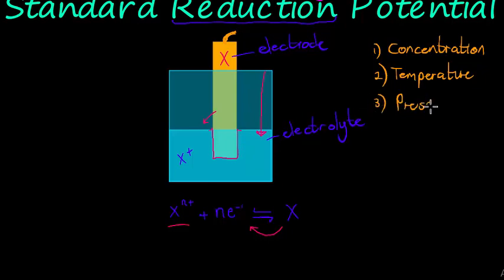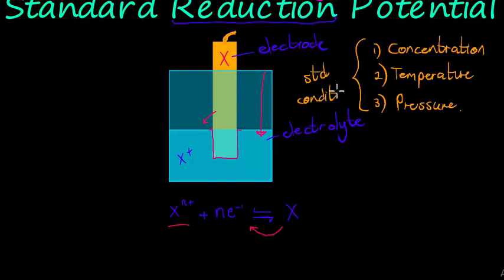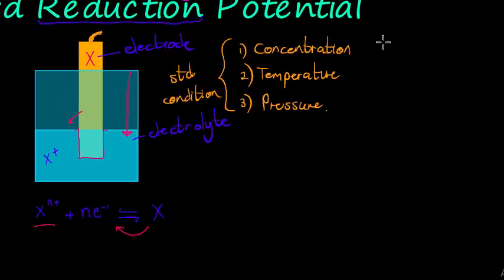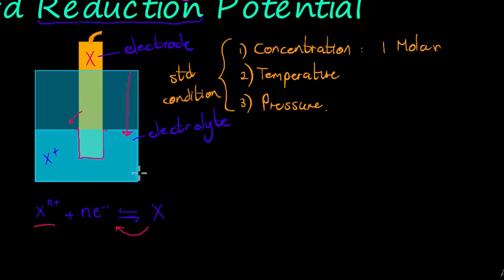We are going to use standard conditions. Under standard conditions: concentration is one molar, which means for every one liter of solution we have one mole of electrolyte; temperature is 25 degrees Celsius; and pressure is one atmosphere.